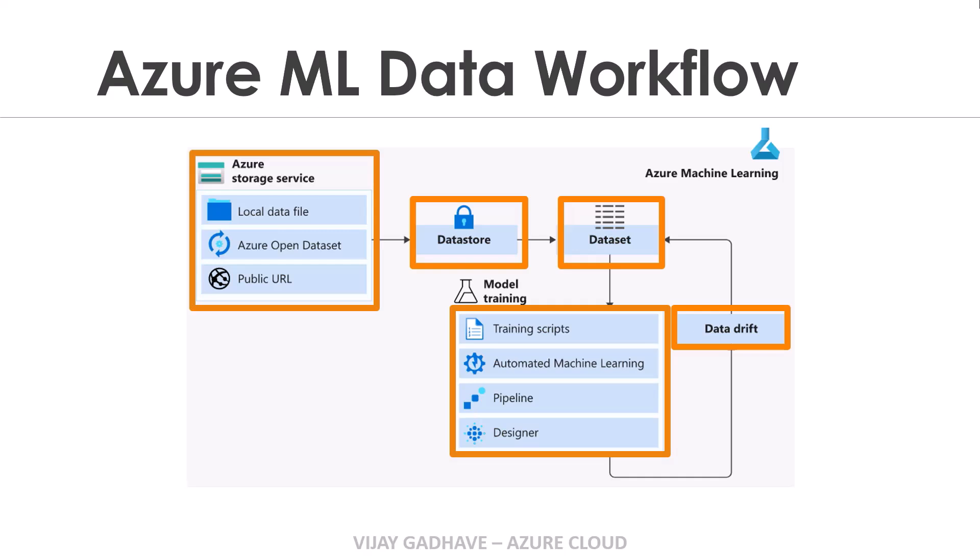So first we have to store our data in Azure Storage Service. After that, we have to create a data store, and using that data store we have to create the data set. Once the data set is created, we can train our machine learning model. And at the end, we can detect the data drift with the help of data set monitors.